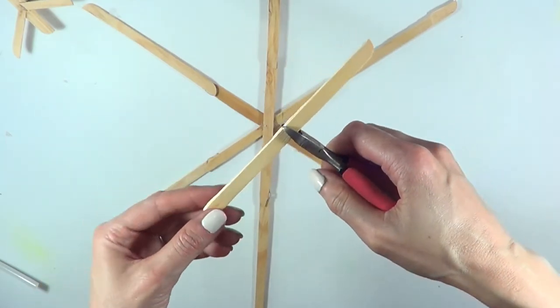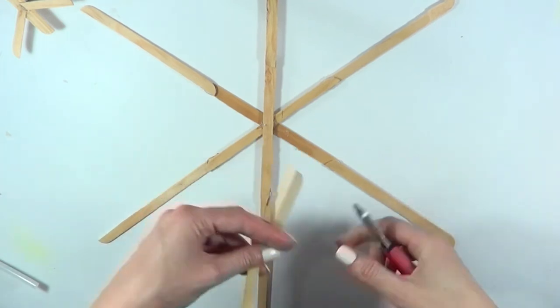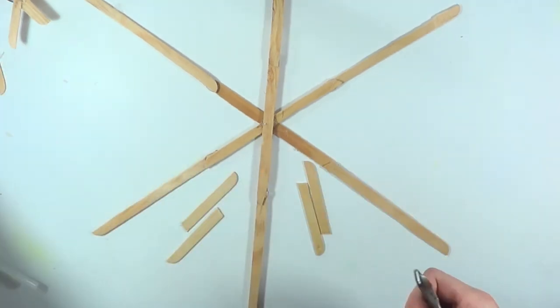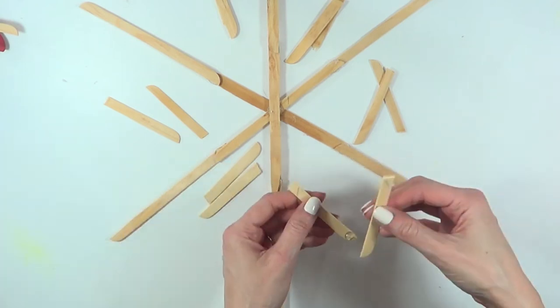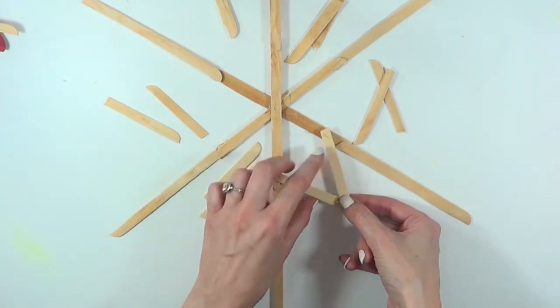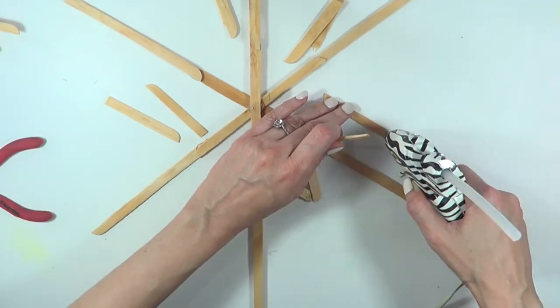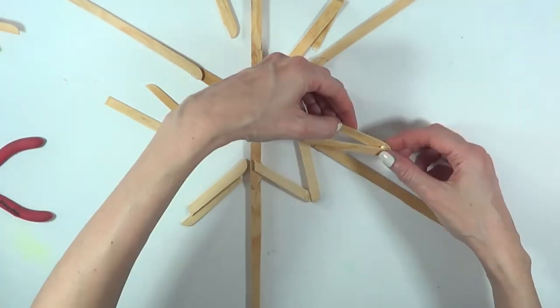This is where it gets kind of tricky, but I'm going to try my best to be as clear as I can with what I'm doing here. I'm going to be cutting six wood sticks in the middle. I'm gluing two sticks from one end like a V almost, and then I'm just going to be cutting the excess.